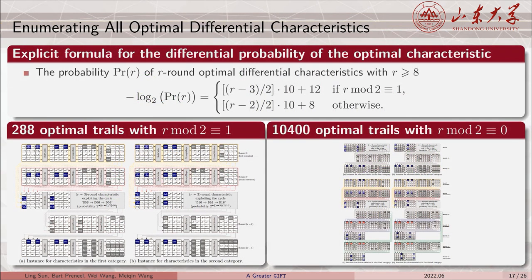In addition, the cycles also enable us to enumerate all optimal differential characteristics by hand. We propose an explicit formula for the differential probability of the optimal characteristic and prove that there are 288 optimal characteristics with an odd number of rounds and 10,400 optimal characteristics with an even number of rounds.